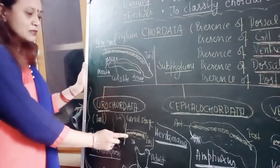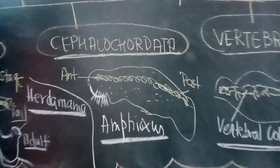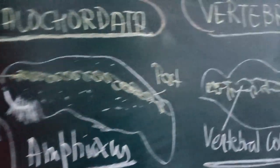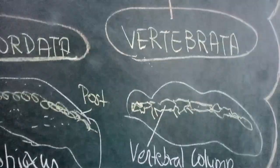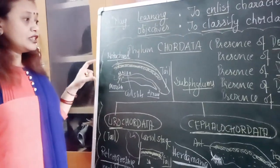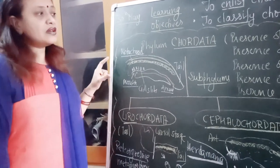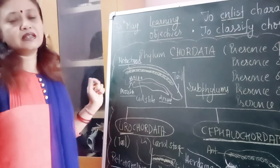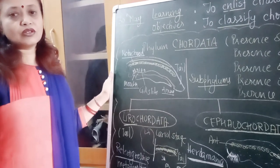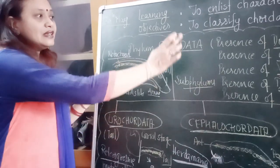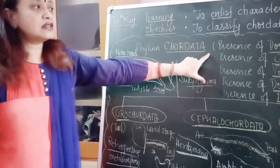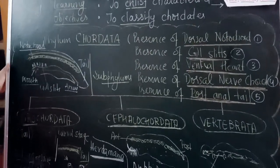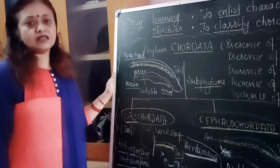So to summarize: if the notochord is restricted to the tail region in the larva, it is Urochordata; if it persists throughout life unchanged, it is Cephalochordata; and if it changes into the vertebral column, then the group is called Vertebrata. These organisms are very important because they represent the link between the non-chordates and the chordates — a transitional phase showing the fate of the notochord. Please keep in mind the list of chordate characters and how chordates are divided into subphylums. Revise it very thoroughly.